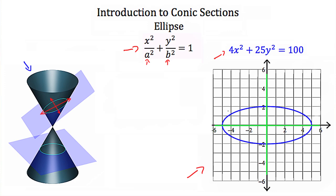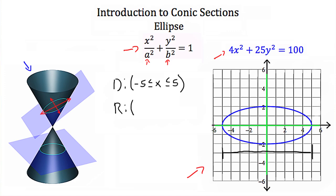The last thing we have to talk about is the domain and range of this ellipse. Like the circle, the domain and range of an ellipse is very restricted. The domain is any x values that can be plugged into this equation and that will get us a y value. In this example, the x values range between negative 5 and positive 5. The range values, or the y values for this ellipse, range between negative 2 and positive 2.